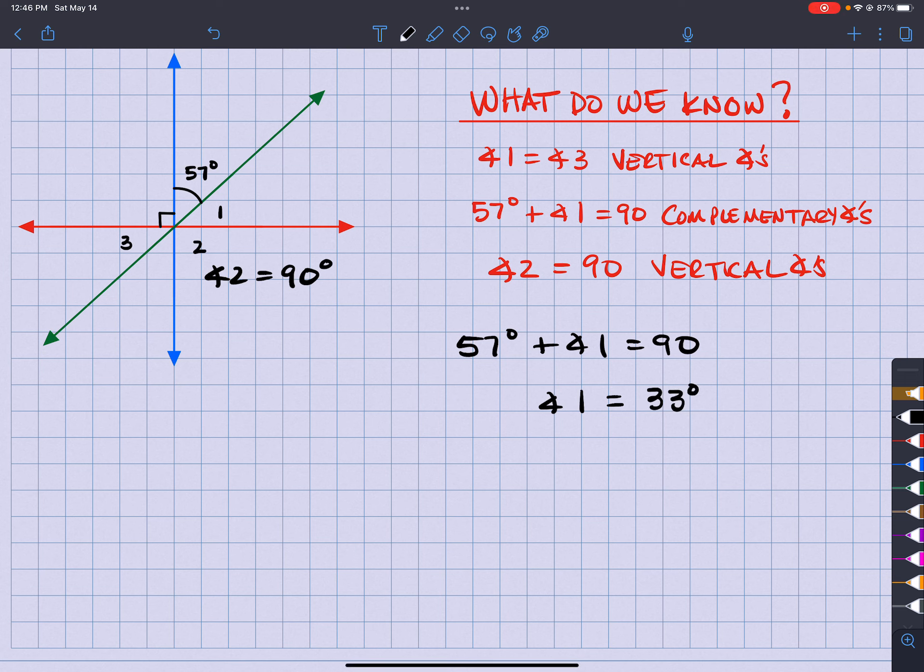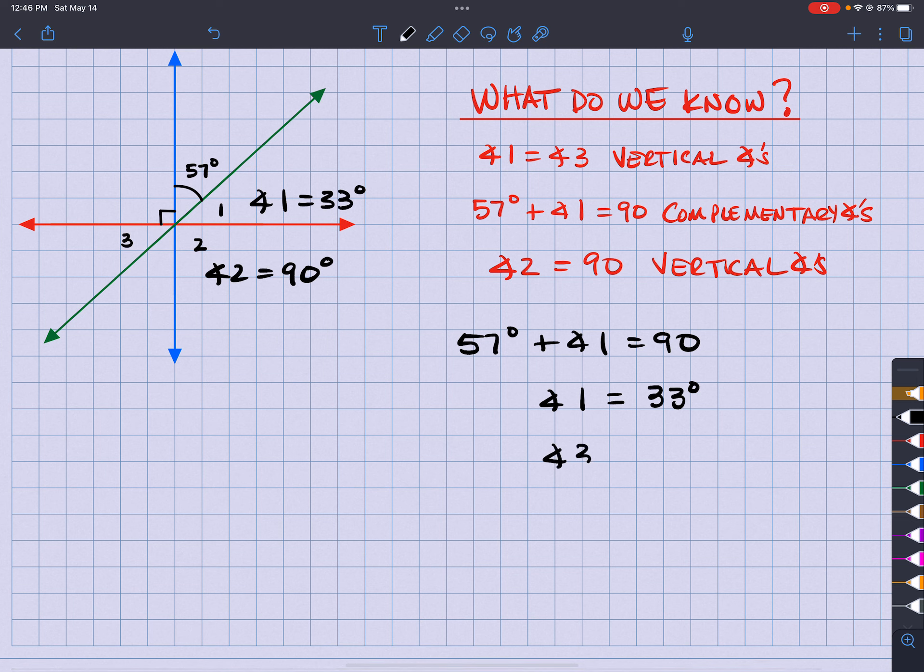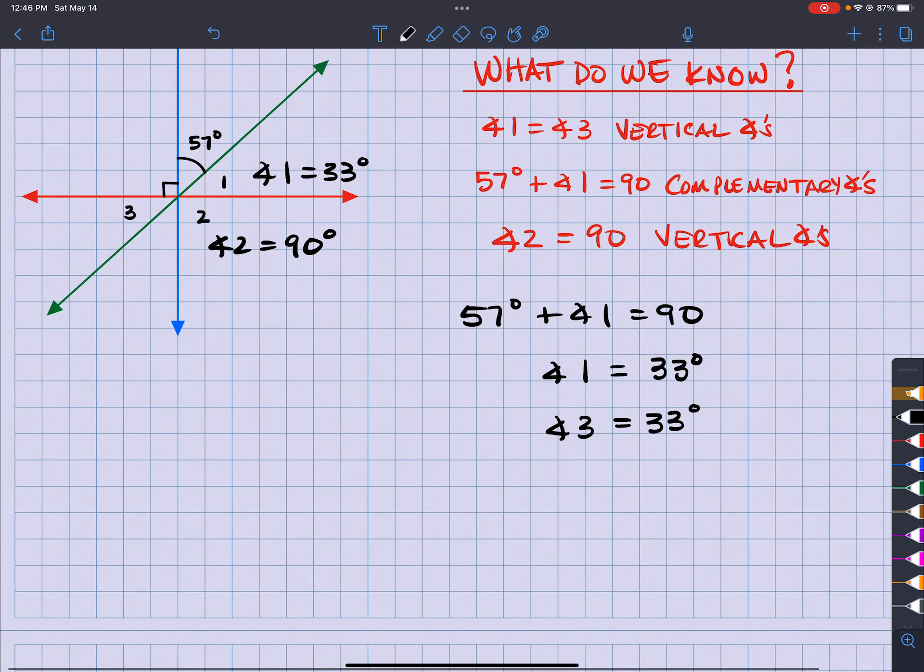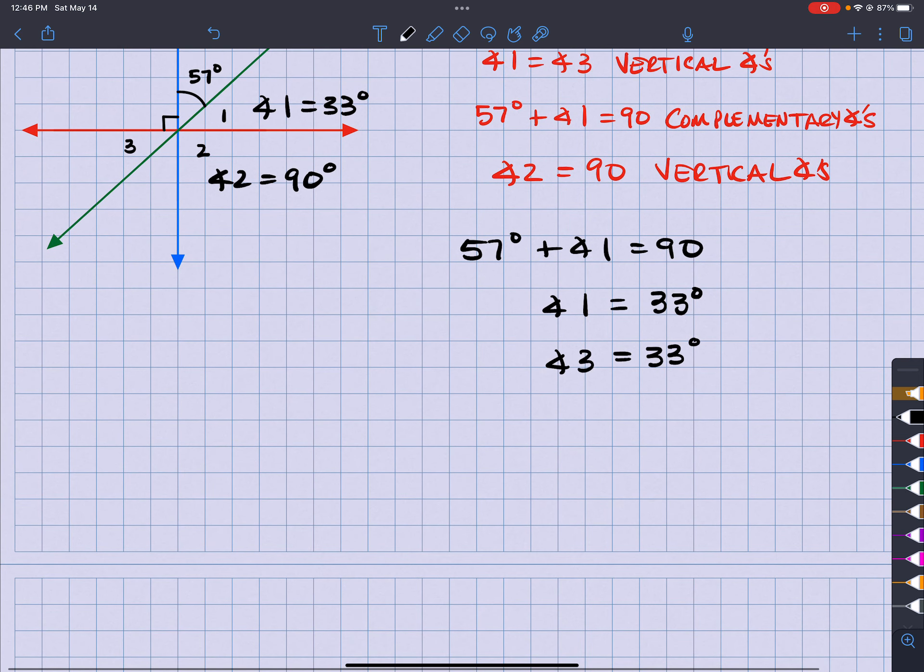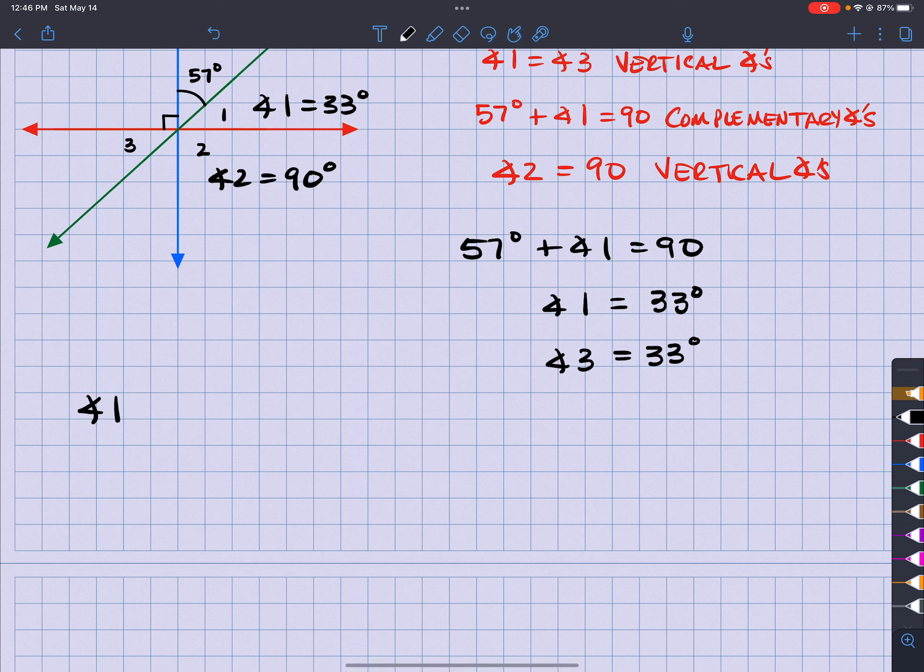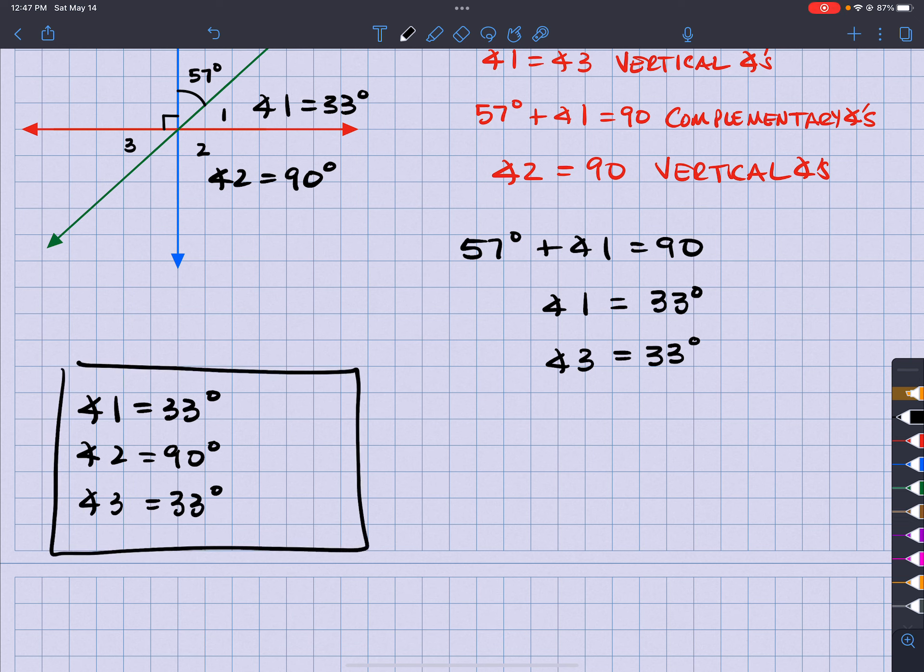So angle 1 equals 33 degrees. And then up here, I see that angle 1 is equal to angle 3. So therefore, angle 3 must also equal to 33 degrees. So with that being said, let's go ahead and write it out. Angle 1 equals 33, angle 2 equals 90, and angle 3 is equal to 33 degrees. And there is our answer.